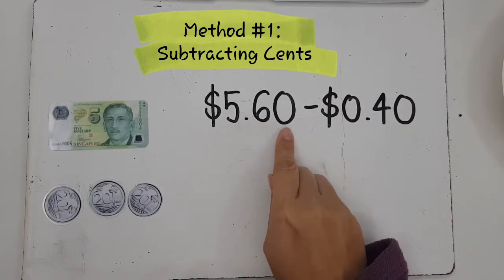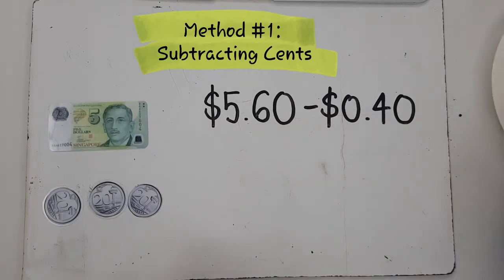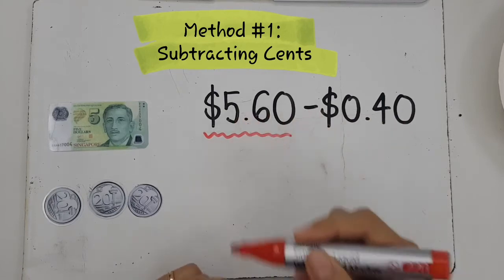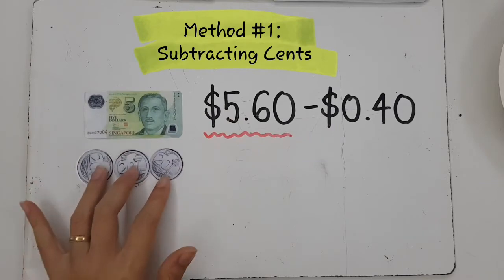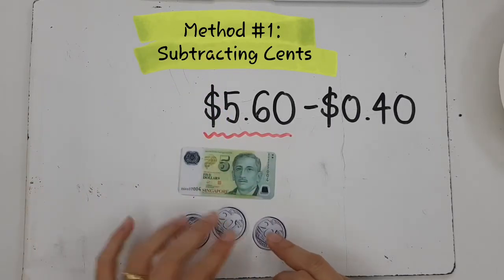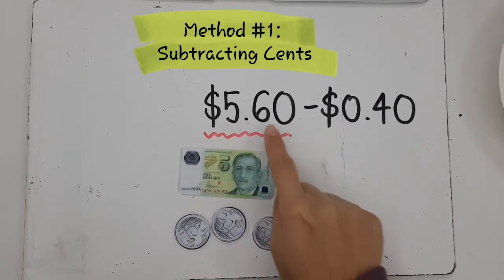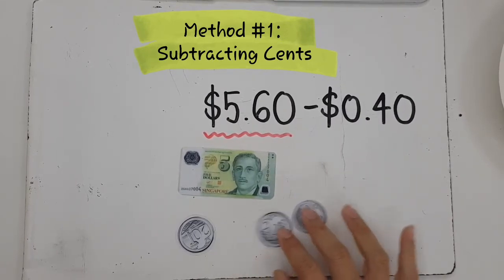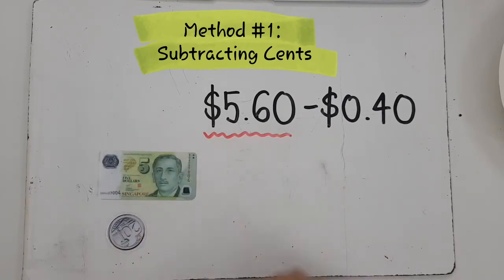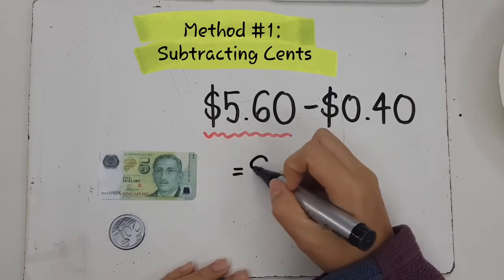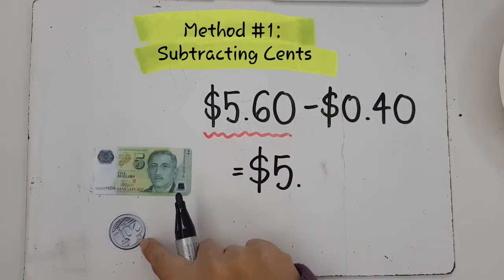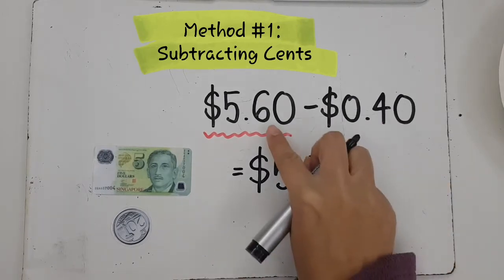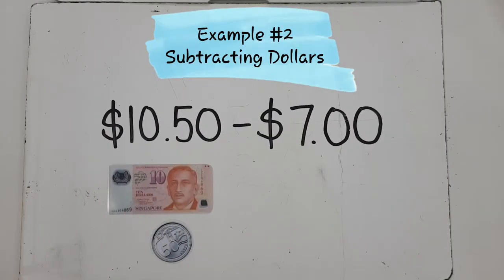Our first example is subtracting cents. The question is $5.60 minus 40 cents. We only have the first amount because we are going to take away 40 cents from $5.60. I have $5.60 here — I'm going to take away 40 cents from the 60 cents. Do I have enough? Yes. So I take away 40 cents and I'm left with five dollars and twenty cents. We always check if we have enough cents to take away.